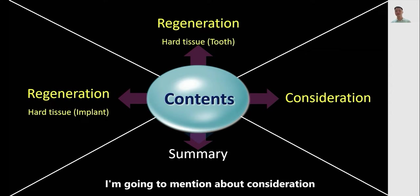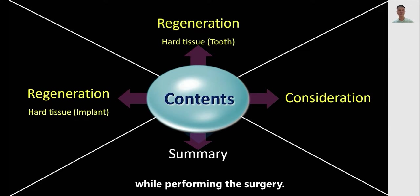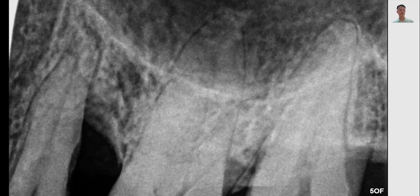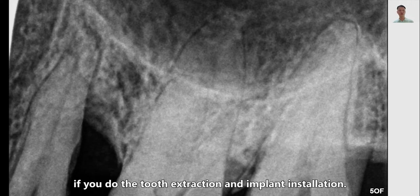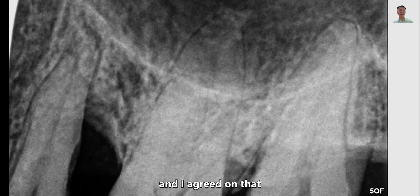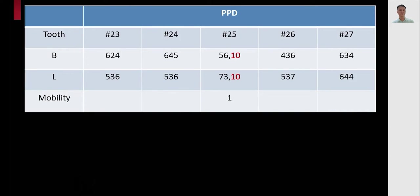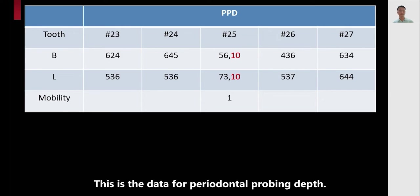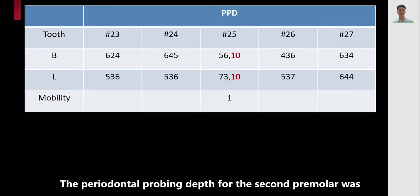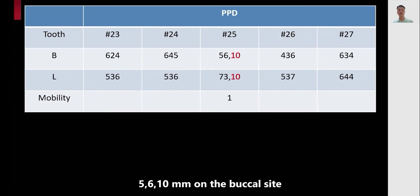I am going to mention considerations while applying the surgery. What would you do for this case? The treatment could be simpler or easier if you do tooth extraction and implant installation, but the patient wanted to save the tooth and I agreed and performed surgery. The thing I want to mention is that the patient received multiple surgeries for the treated tooth. The periodontal probing depth for the second premolar was 5, 6, and 10 millimeters on the buccal side, and 7, 3, and 10 millimeters on the palatal area. The tooth had first degree mobility.